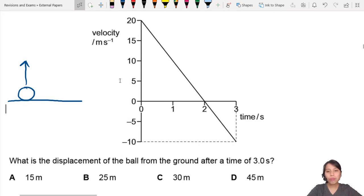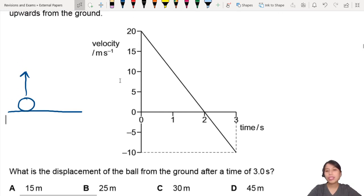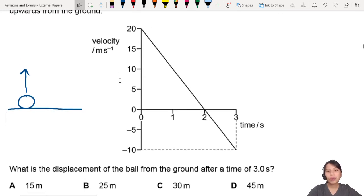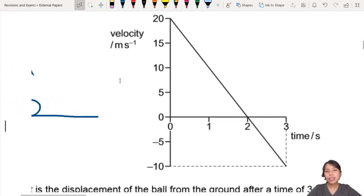What is the displacement of the ball from the ground after a time of 3 seconds? So that's the whole graph here. You've got to think of this. How do you understand this graph?